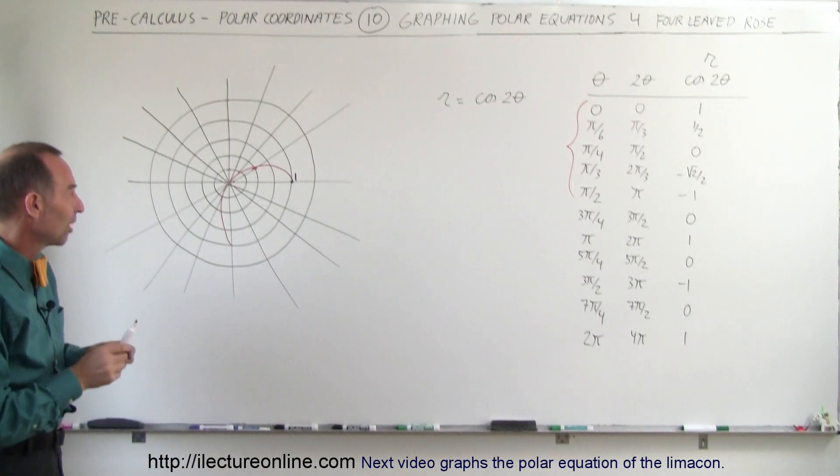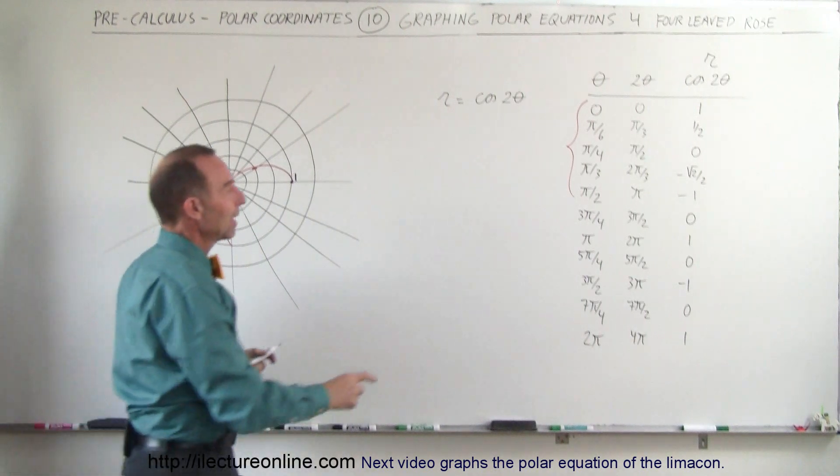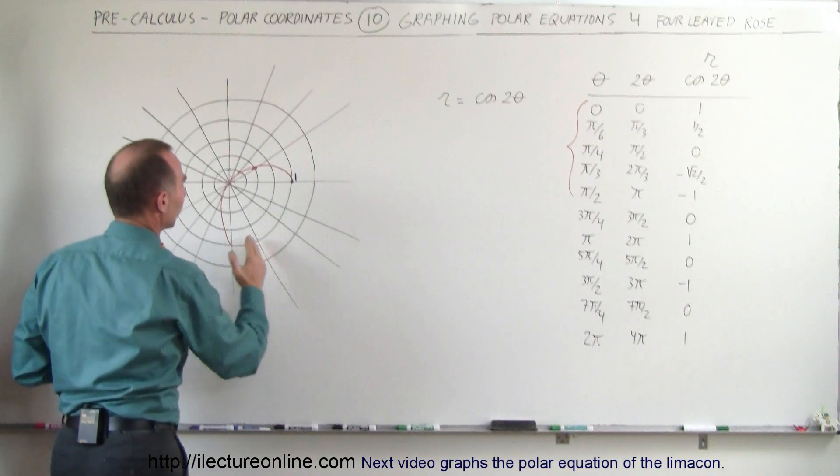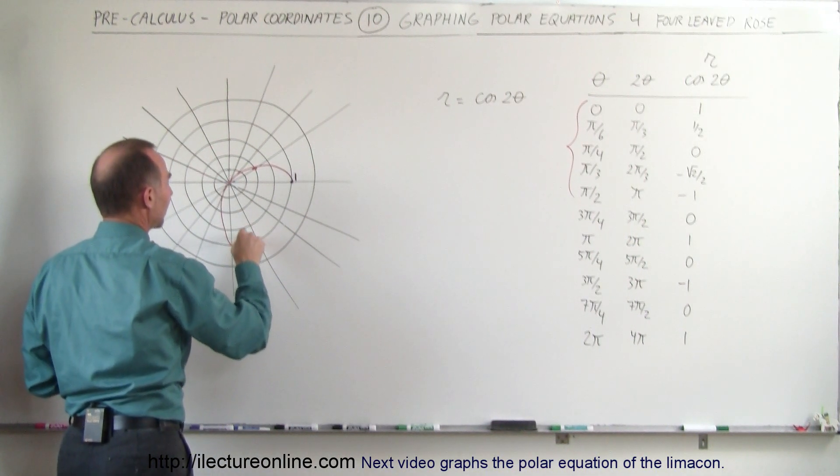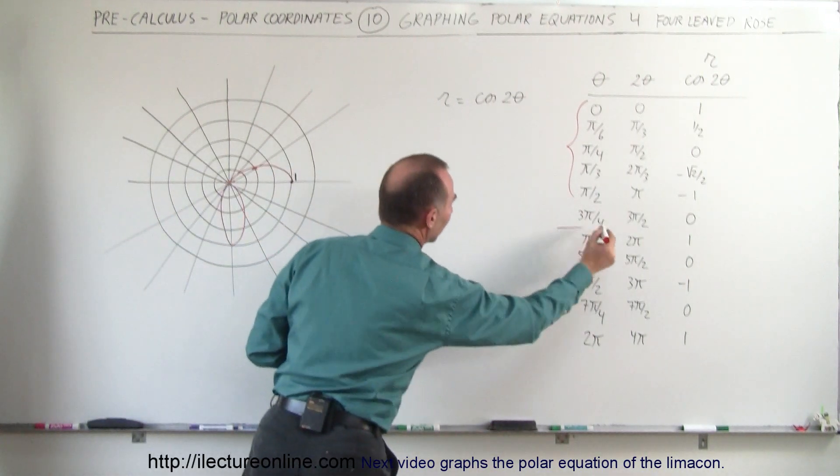All right, so beginning to shape up. Well, maybe you can't see it yet, so stay tuned and see what happens next. At 3 pi over 4, we get 0 again. So 3 pi over 4, that would put us right here, and then we go back to 0. So what happens is this comes back down and back down to 0 like this. So now we are at this location.